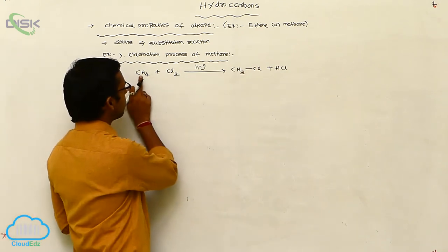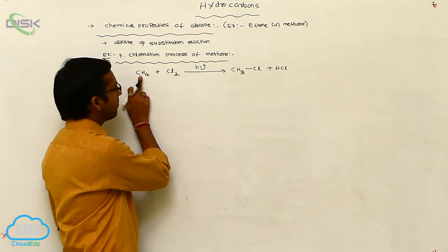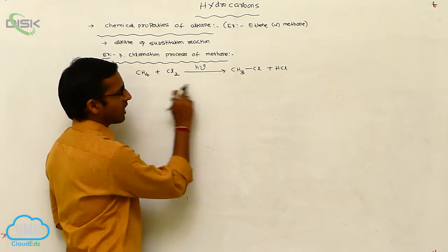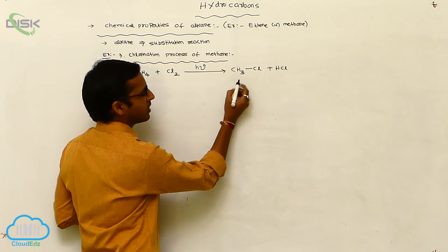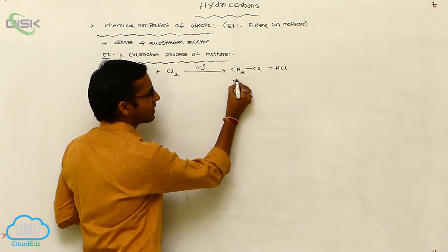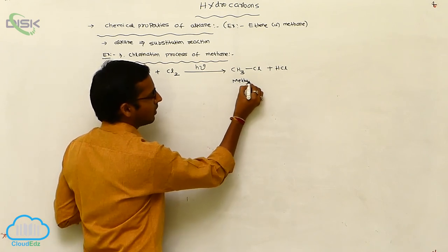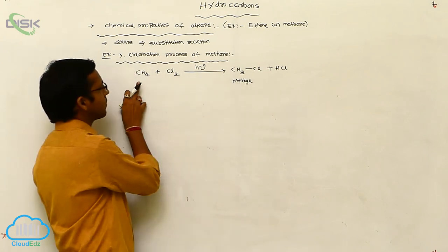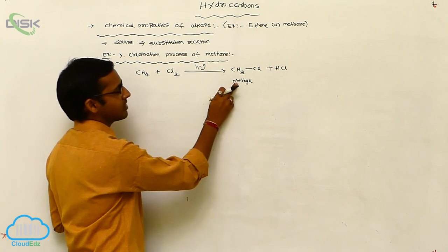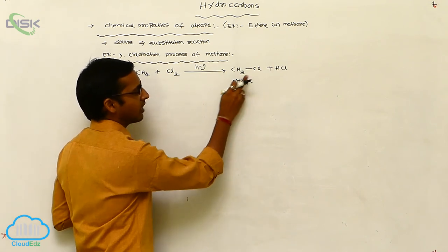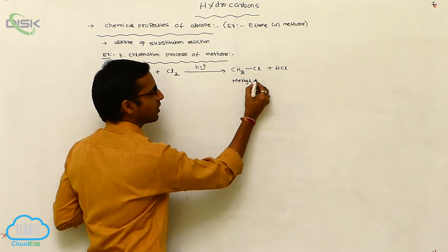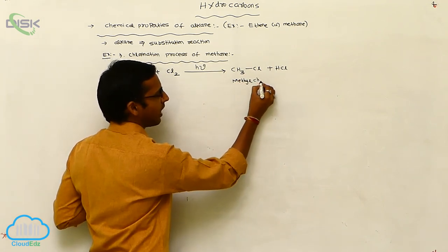Methane loses one hydrogen atom to become a methyl group (CH3). The methyl group combines with chlorine to form methyl chloride (CH3Cl). Methane is the alkane, CH3 is the alkyl group, and Cl is chlorine — together forming methyl chloride.